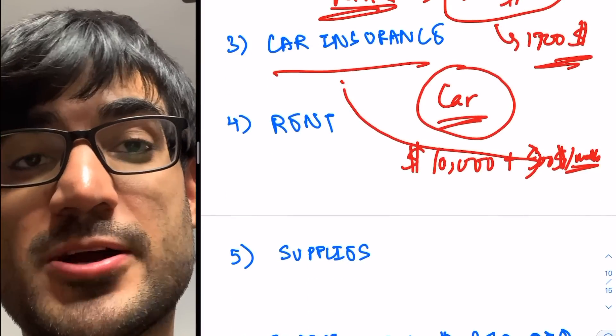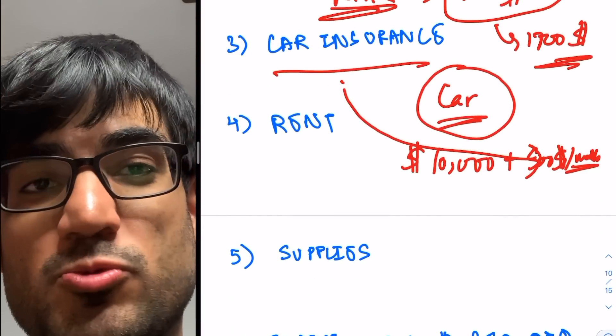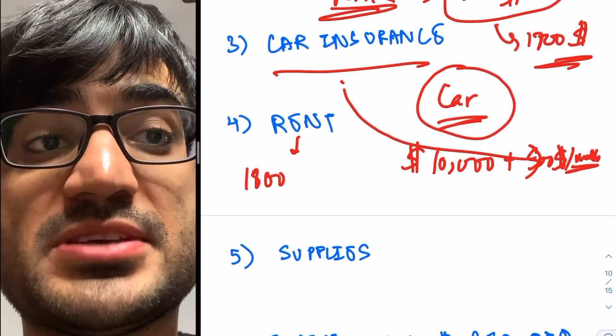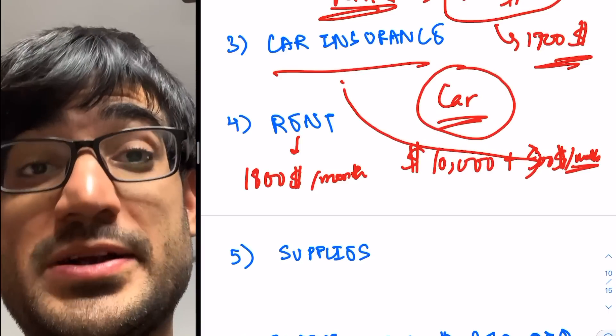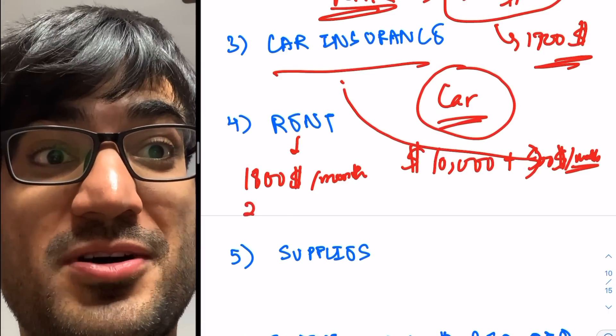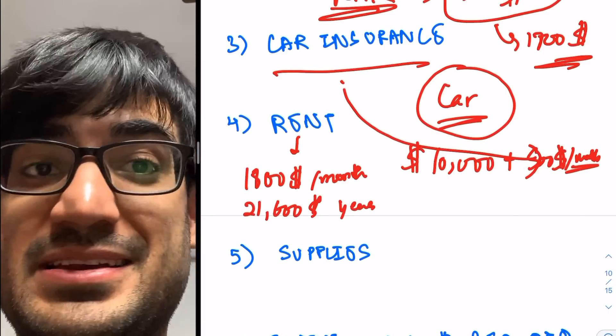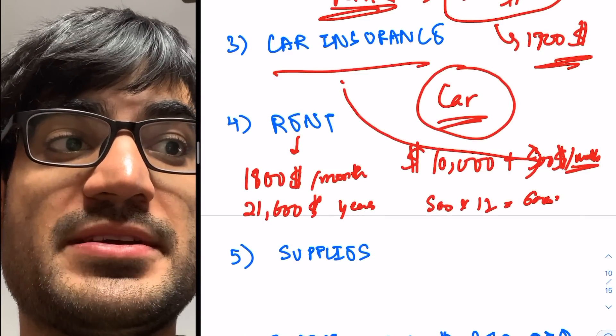Then is rent. In New York, what happens is, a shoebox apartment, which is just one room, if you want it in a good place, it will cost you about $1,800 per month. Now multiply that by 12. So that's about $21,600 per year. And if I can get student housing, that will cost me how much? $500 into 12, which is about $6,000 per year.